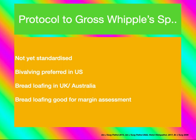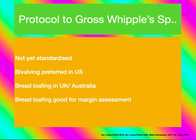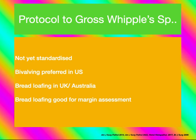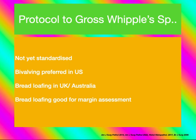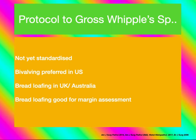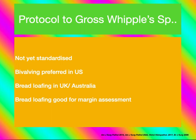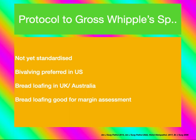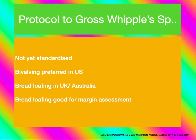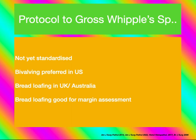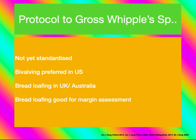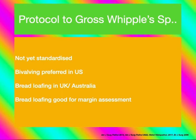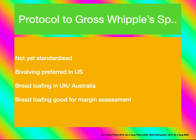Let us understand the grossing of Whipple's resection specimen. The protocol for Whipple's resection specimen is not yet standardized. There are different methods followed across the world: bivalving is preferred by the Americans, and bread loafing is preferred by the British and Australians. Bread loafing is relatively good for assessing margins, whereas bivalving is preferred when we want to look at the tumor epicenter. Both have advantages and disadvantages.